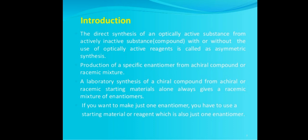So what is asymmetric synthesis? It is the synthesis of an optically active substance — that is, a chiral compound — from an achiral compound, with or without the use of optically active reagents. In this process, a specific enantiomer is produced, whether the starting material is chiral or a racemic mixture.